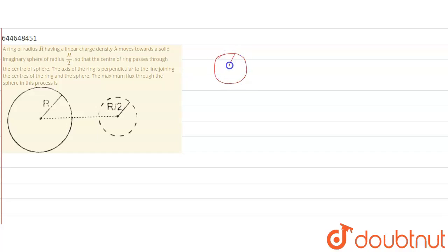This is R, right, of radius R. Similarly, there is another R, another circle whose radius is R by 2, right?